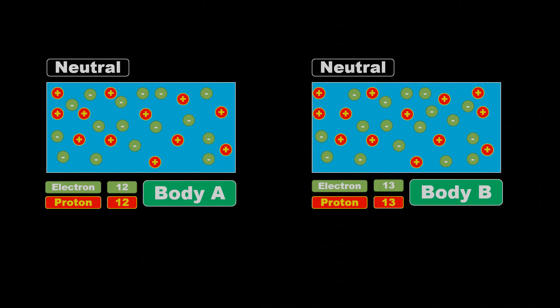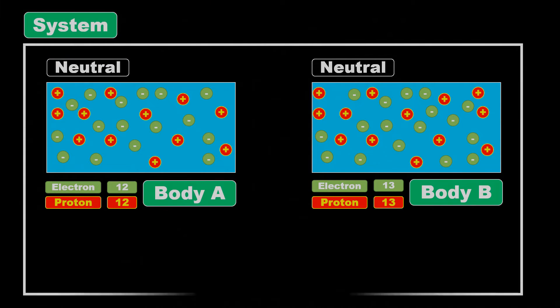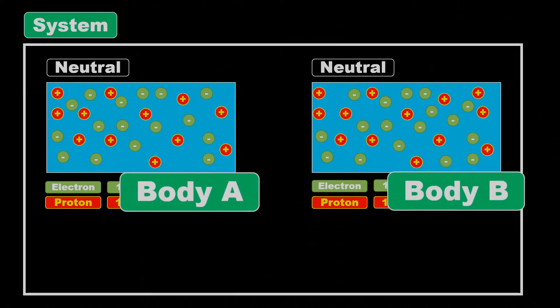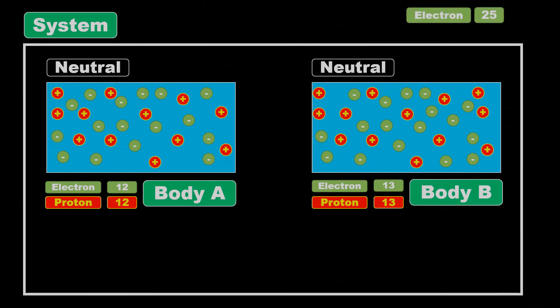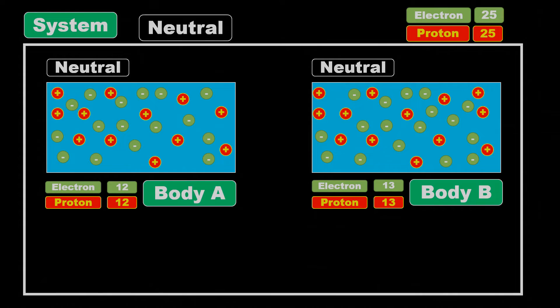If we consider the total number of electrons and protons in our system, which includes both body A and body B, we have total 25 electrons and 25 protons, and our system is also electrically neutral.